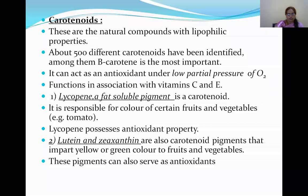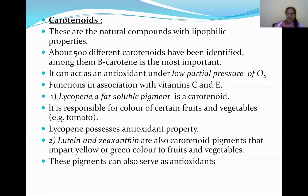Examples of carotenoid pigments are lycopene, lutein, and zeaxanthin. Lycopene is a fat-soluble pigment responsible for the red color of certain fruits and vegetables, such as tomatoes, and possesses antioxidant properties. Lutein and zeaxanthin impart yellow or green color to fruits and vegetables and also serve as antioxidants.